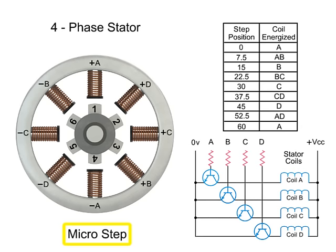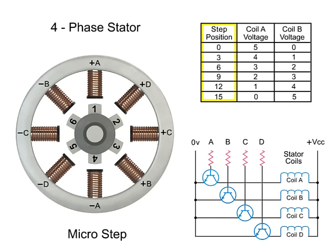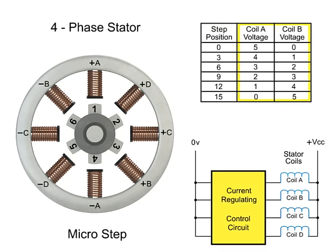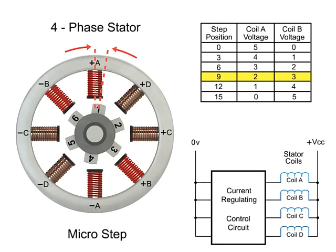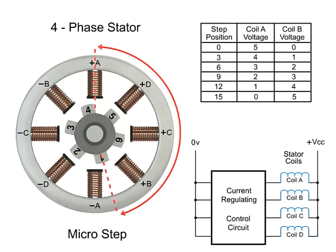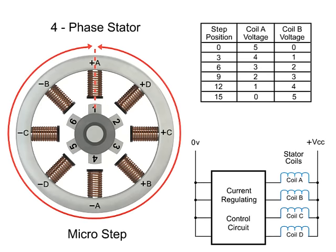Micro-stepping controls the current in the motor winding to a degree that further subdivides the number of positions between poles. To achieve micro-steps, the coils are only partially energized. Applying a maximum voltage of 5 VDC to coil A and a minimum voltage of 0 VDC to coil B, rotor position 1 will line up. Reducing the voltage to coil A and increasing voltage to coil B, the rotor will begin to rotate clockwise and continue until the voltage is 0 at coil A and 5 at coil B. This process continues at all coils within the stator to provide accurate positioning. As you can see in this example, 120 steps are required to make a full rotation at 3-degree increments.